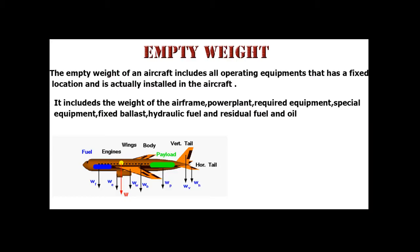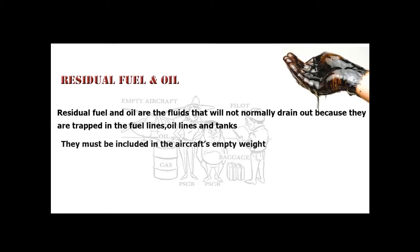Empty Weight: The empty weight of an aircraft includes all operating equipment that has a fixed location and is actually installed in the aircraft. It includes the weight of the airframe, power plant, required equipment, fixed ballast, hydraulic fluid, and residual fuel and oil. Residual fuel and oil are the fluids that will not normally drain out because they are trapped in the fuel lines, oil lines, and tanks, and must be included in the aircraft's empty weight.